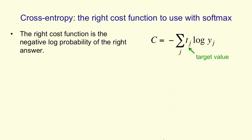That is, we want to maximize the log probability of getting the answer right. So if one of the target values is a 1 and the remaining ones are 0, then we simply sum over all possible answers. We put zeros in front of all the wrong answers and we put 1 in front of the right answer, and that gets us the negative log probability of the correct answer, as you can see in the equation.